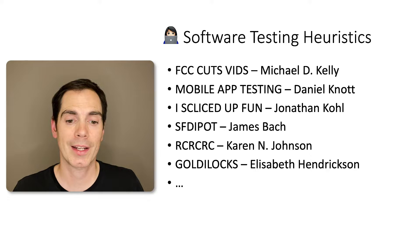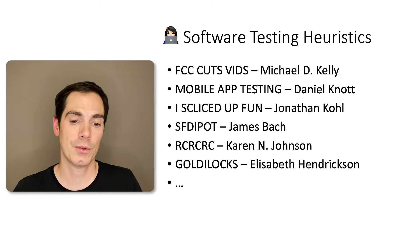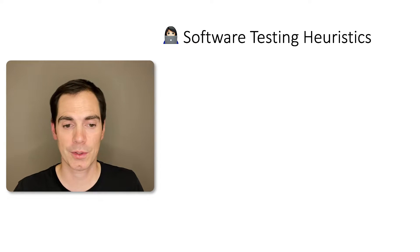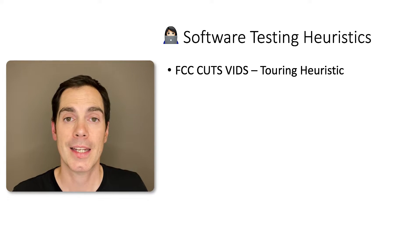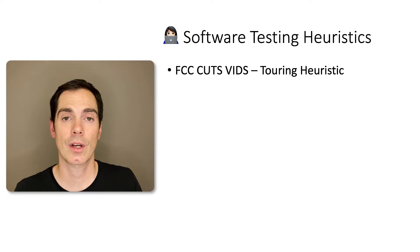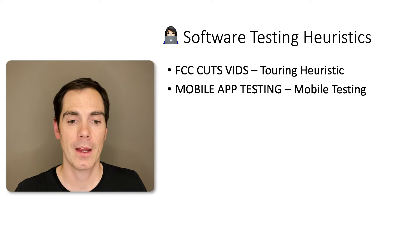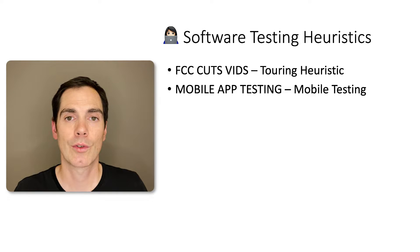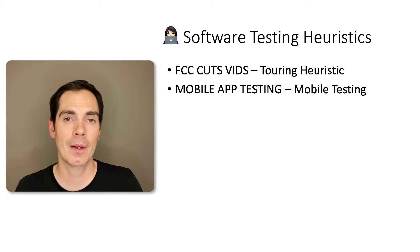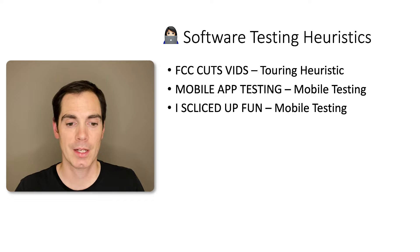I selected just a few mnemonics or heuristics so you can get a feeling for what's available and what purpose each serves. FCC CUTS WIDTHS is a touring heuristic — you can create testing tours on your application with different focuses. My own mnemonic is about mobile testing, helping you focus on the most important things when testing a mobile app. I SLICED UP FUN serves a similar purpose.